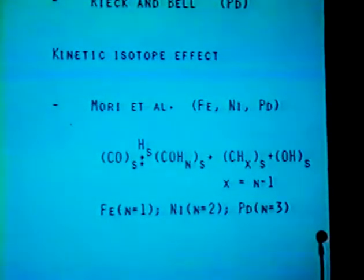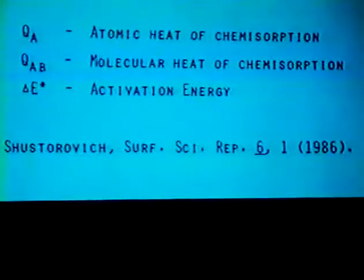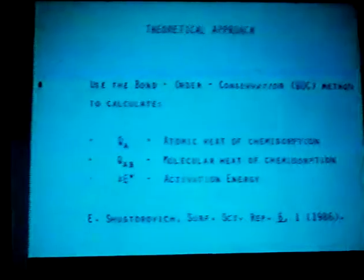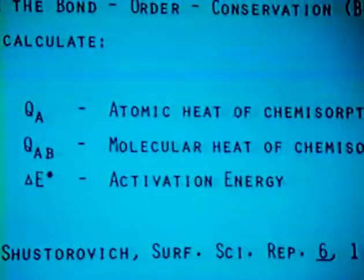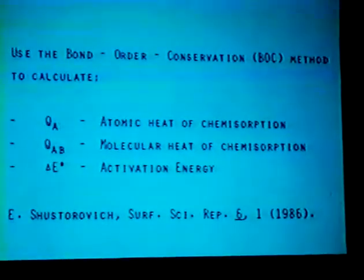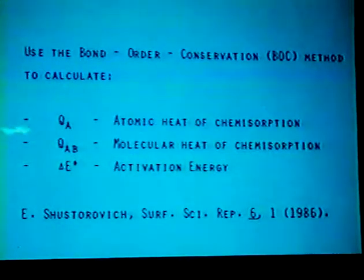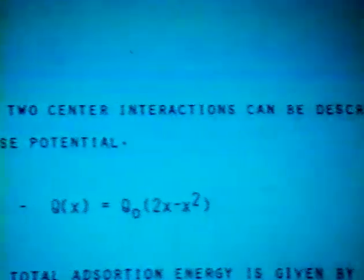We wanted to address this question, Dr. Shustorovich and I, in terms of theory. The theory that was applied is the bond order conservation method, a theory developed originally by Dr. Shustorovich. This theory has been described very nicely in a series of papers in Surface Science and summarized last year in a review in Surface Science Reports. What the theory allows you to do is, with a minimum of experimental data and virtually no empirical coefficients, to calculate the atomic heat of chemisorption, molecular heat of chemisorption, and the activation energy for simple elementary processes occurring on a surface. Since some of you may be unfamiliar with the elements of the theory, let me very quickly, in just a few slides, summarize the essence of the technique.